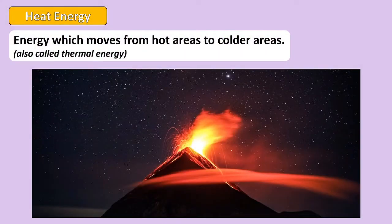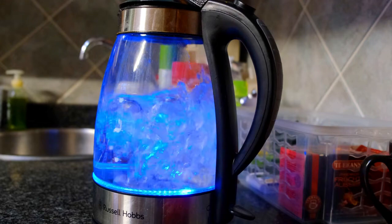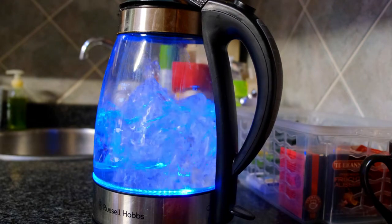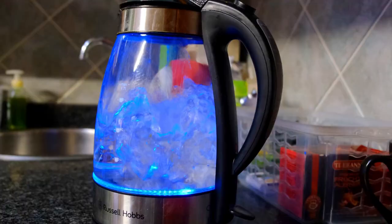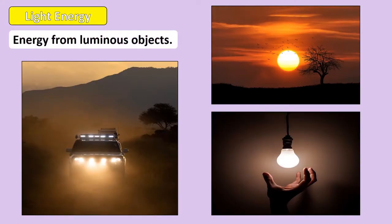Heat or thermal energy is the energy that particles in an object have as they move from hot areas to colder areas. As discussed in the states of matter and chemical reactions topic, the more heat energy an object has, the more its atoms or molecules move. Think of how boiling water in a kettle moves a lot more than cold water, just because heat energy is added to it. Light energy is a form of energy emitted from luminous objects, including the sun and bulbs, which all give off light.